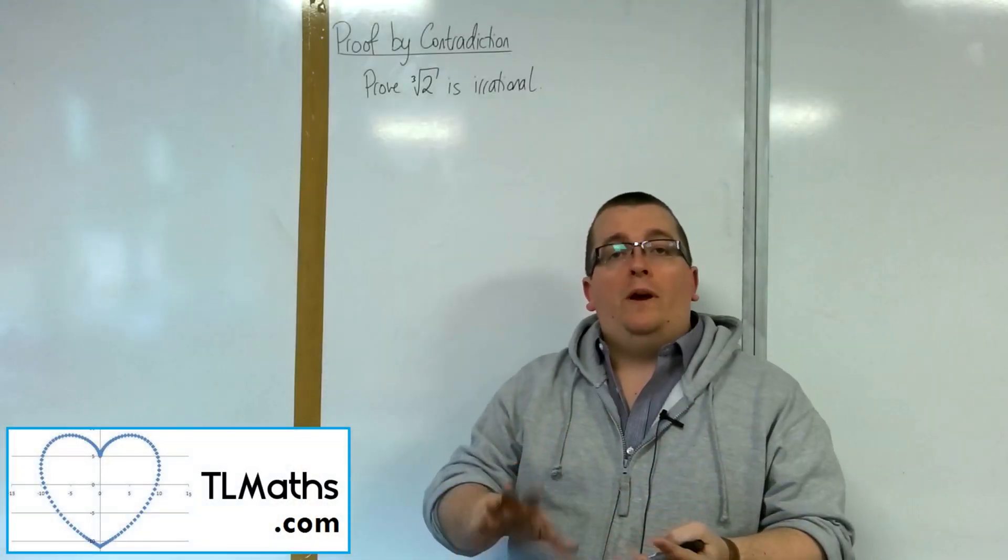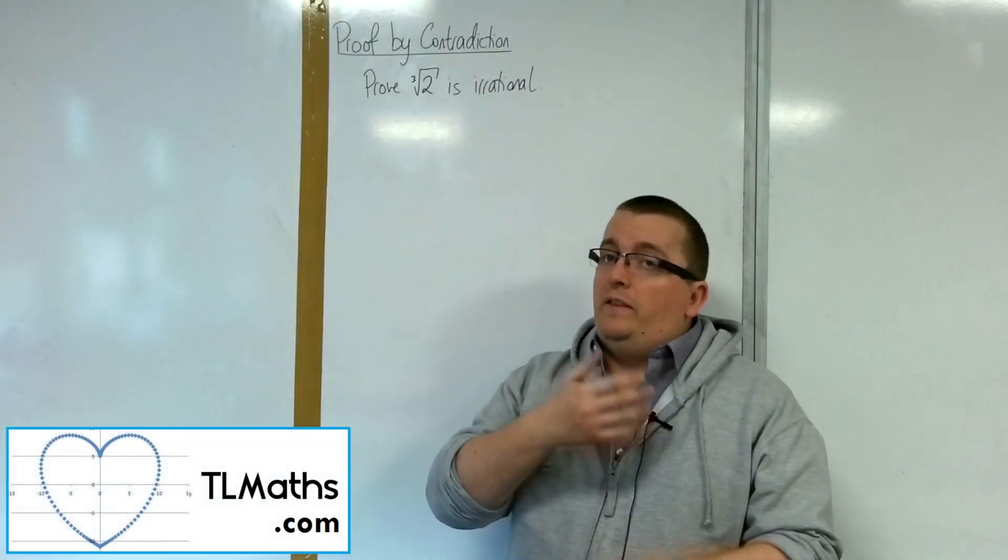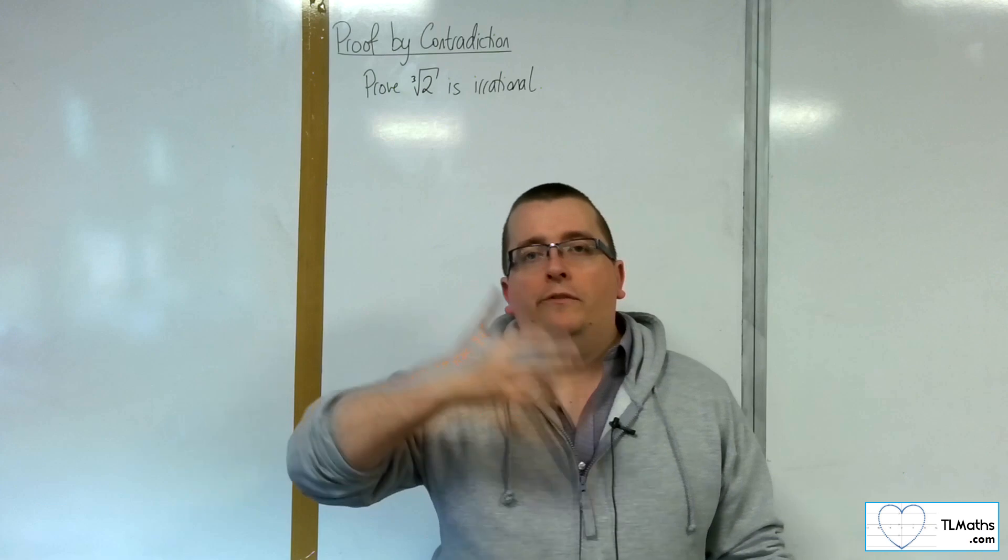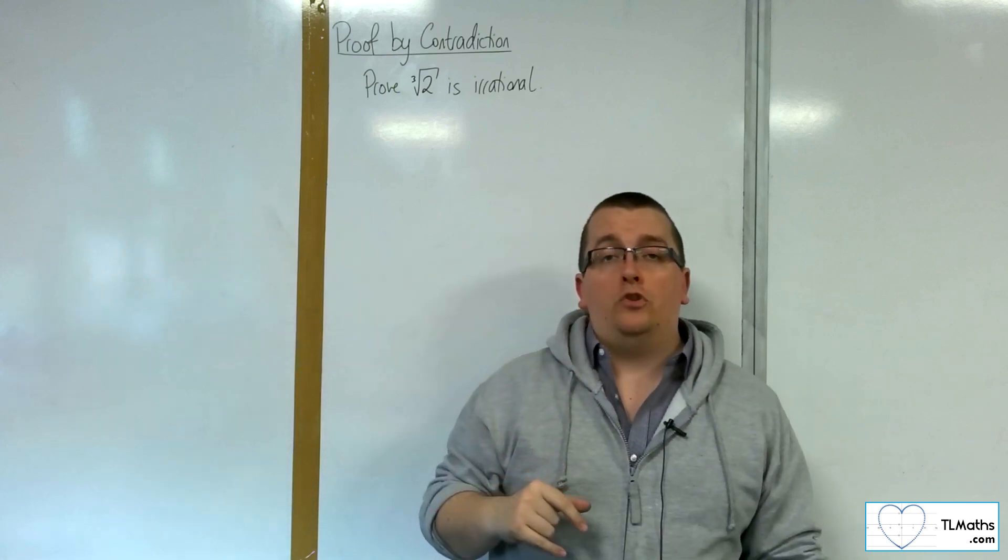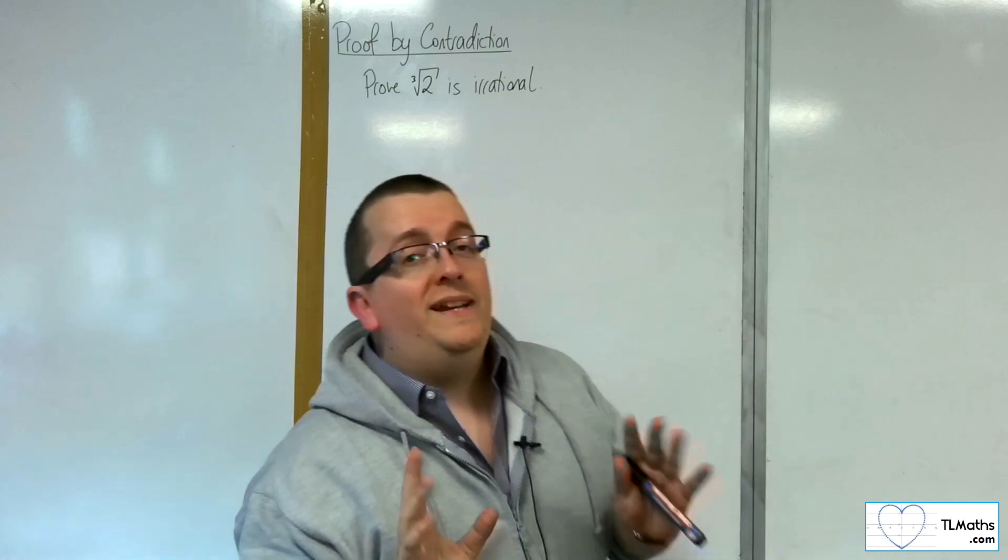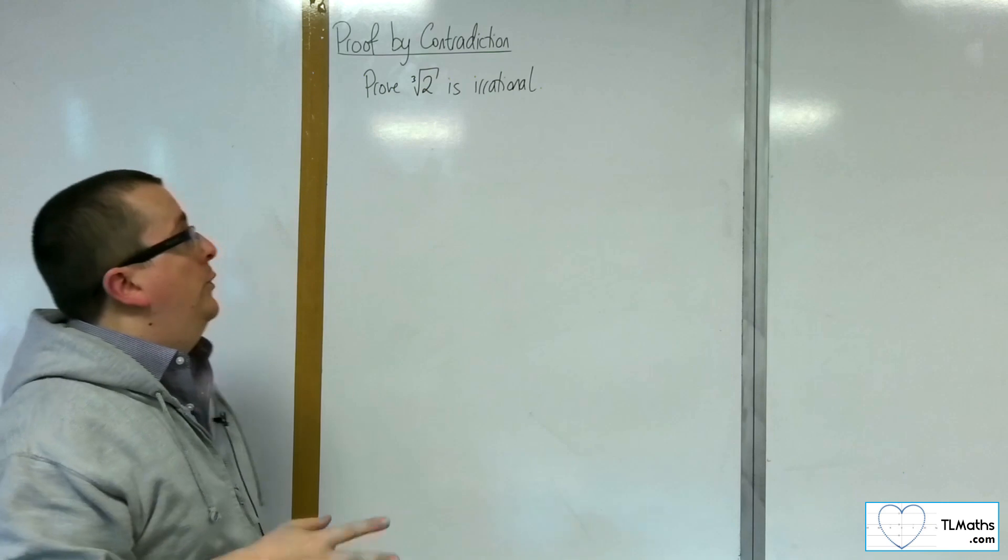We've seen the proofs that root 2 and root 3 are irrational, and we've seen that they can be extended up to root 5, root 7, root 11, etc. But how about if we needed a proof that the cube root of 2 is irrational?